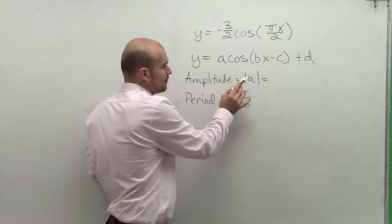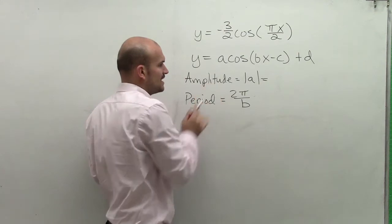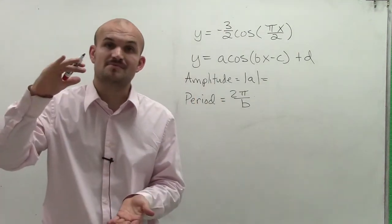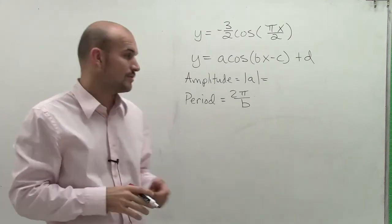And remember, our a, when we take the absolute value of a, that gives us our amplitude. The amplitude is your distance from your maximum point and your minimum point of your graph.